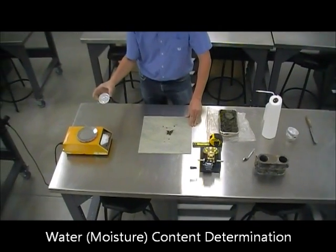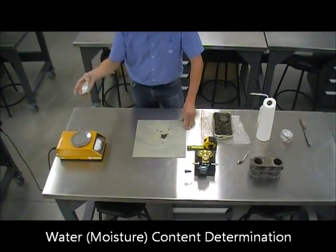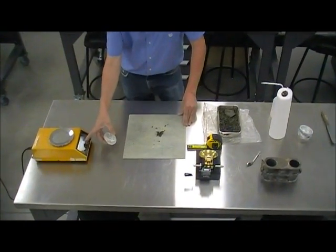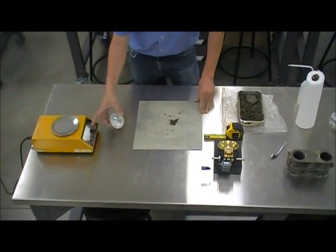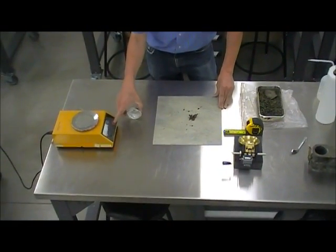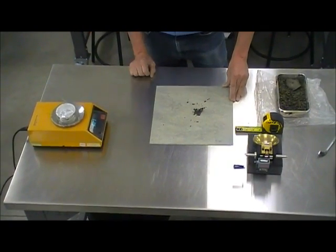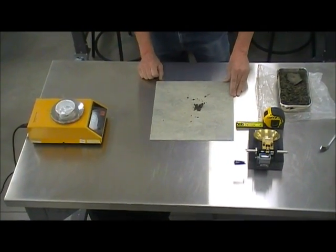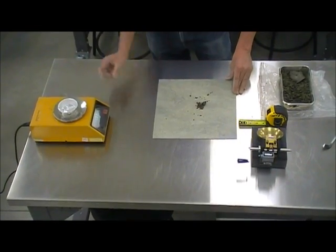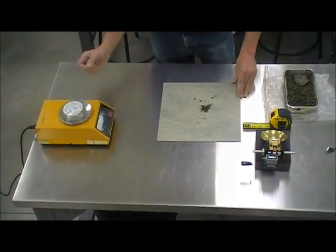For that purpose, we use the water content determination equipment. It's a scale capable of reading to the one hundredths of a gram. We tare it to zero, and we weigh the dish, recording that weight. So that would be the weight of the dish or cup.